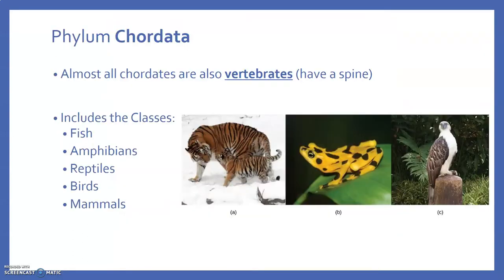Now we've made it to the chordates. For all intents and purposes, especially in Bio 101, almost every chordate is a vertebrate — having a spinal cord, a spine, and a vertebral column of bones. This includes the more commonly familiar classes of animals: fish, amphibians, reptiles, birds, and mammals. We're going to go through each of these classes in the next lecture.